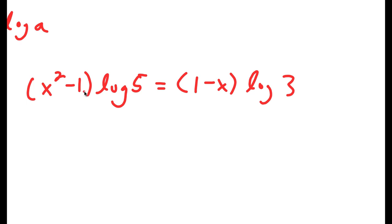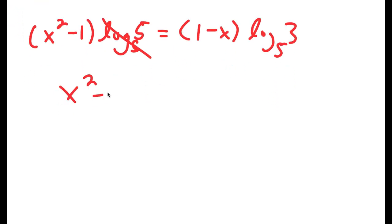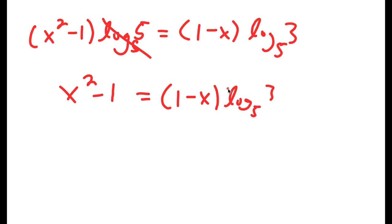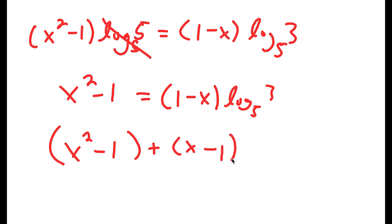Now I'm going to divide both sides by log 5, so those cancel out to get 1. Now I have x squared minus 1 is equal to 1 minus x times log base 5 of 3. And this means that x squared minus 1 plus x minus 1 times log base 5 of 3 is equal to 0.